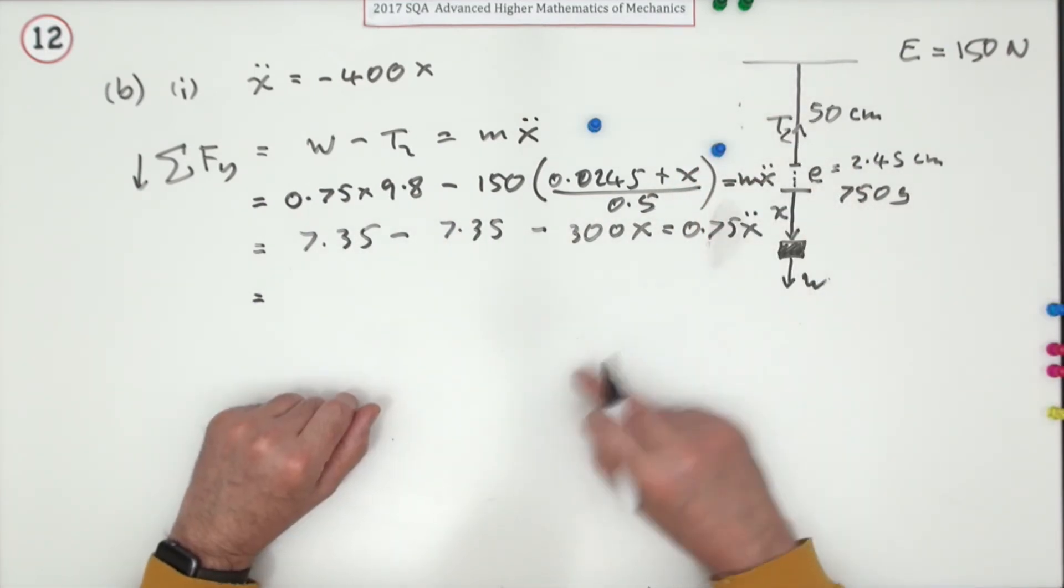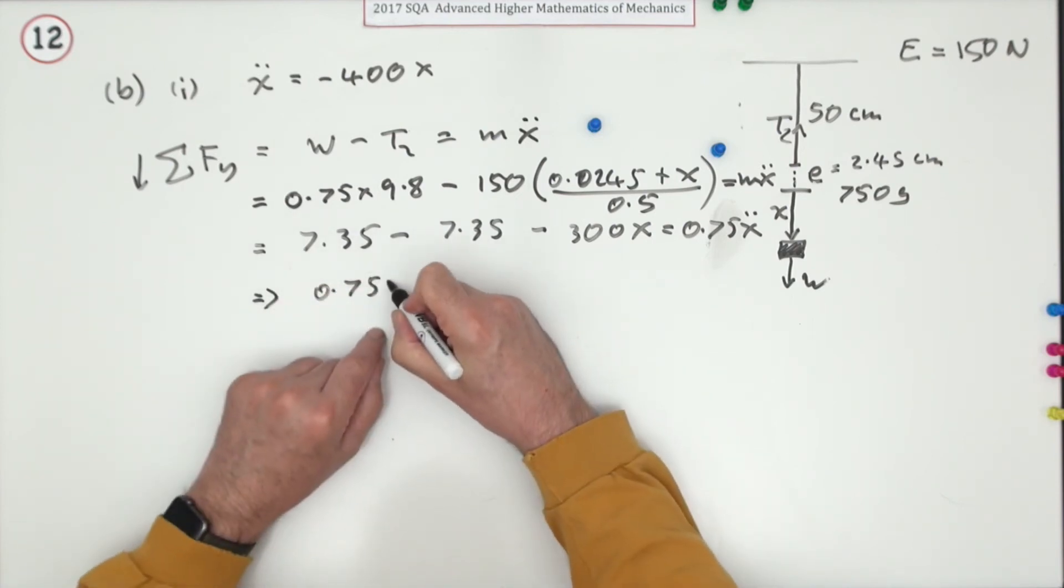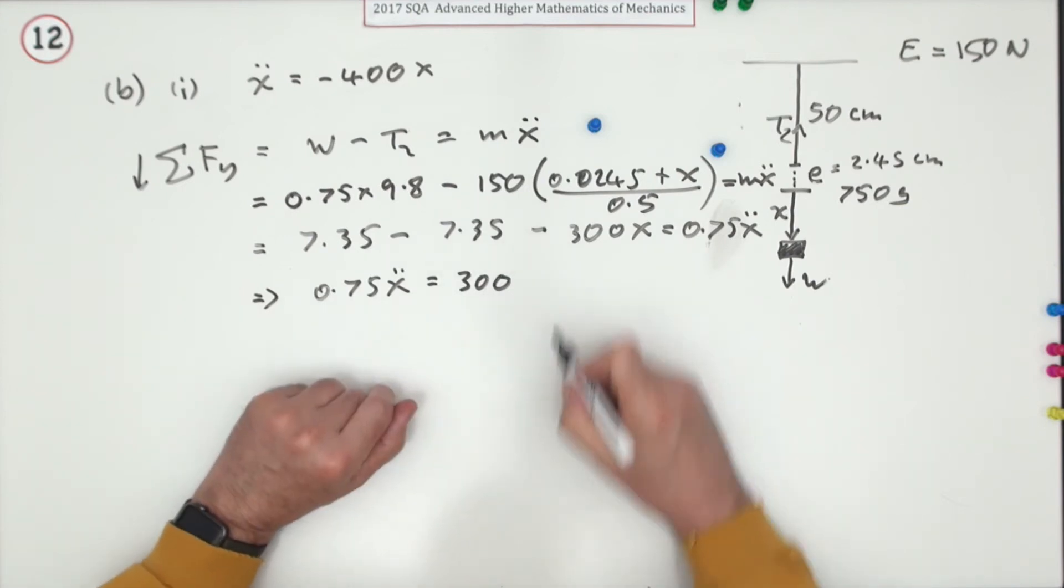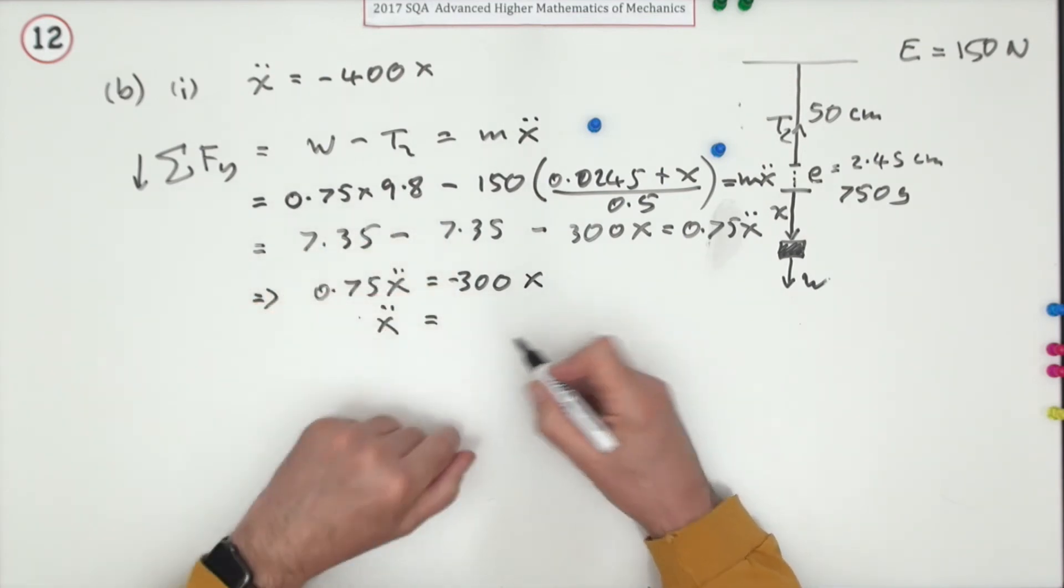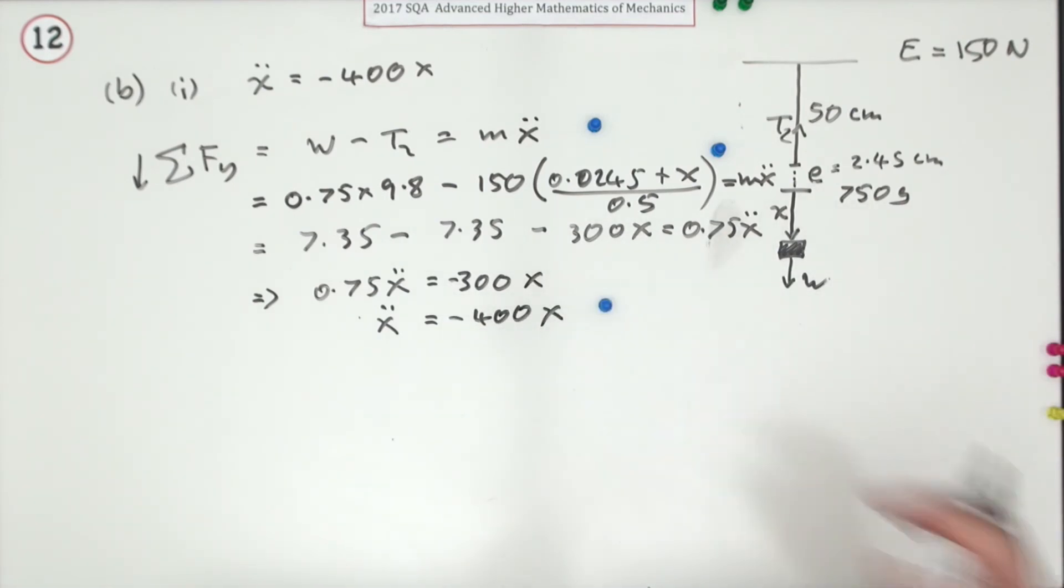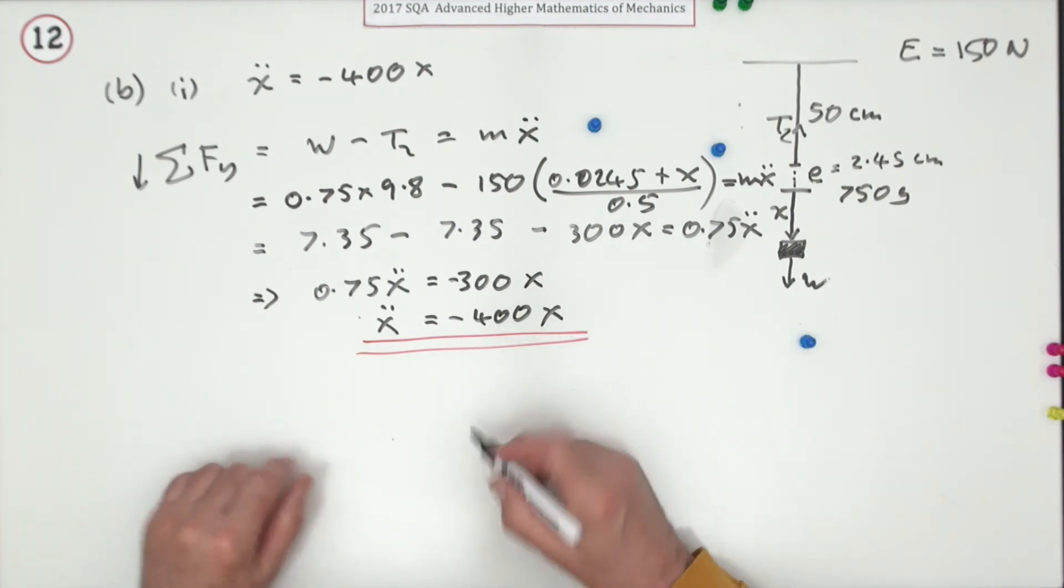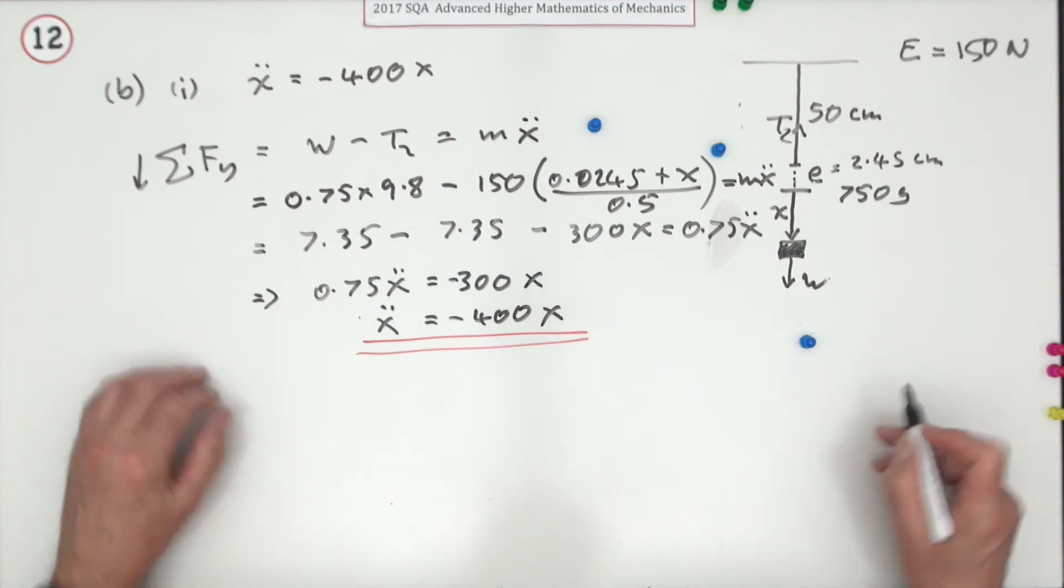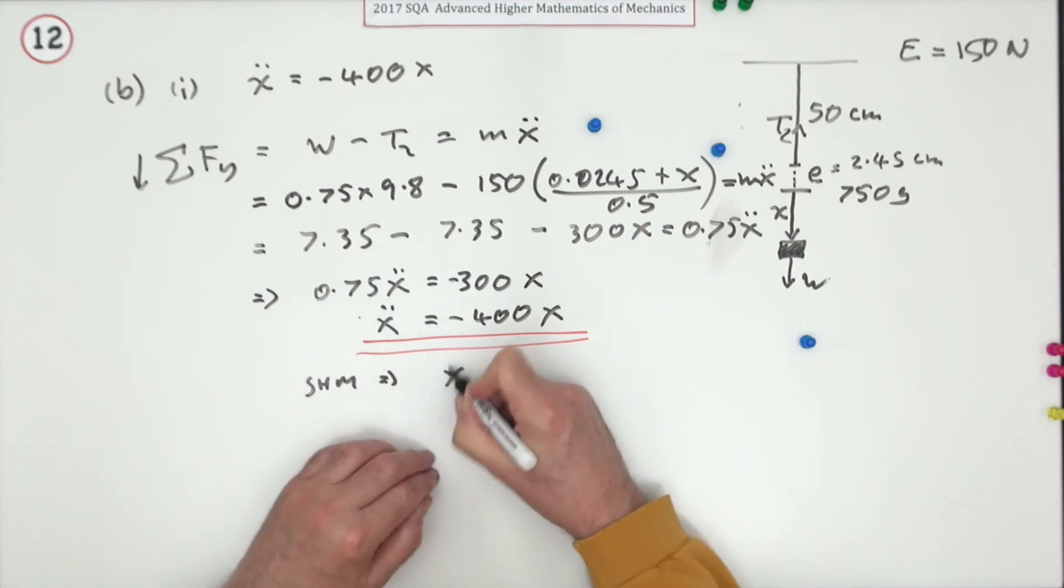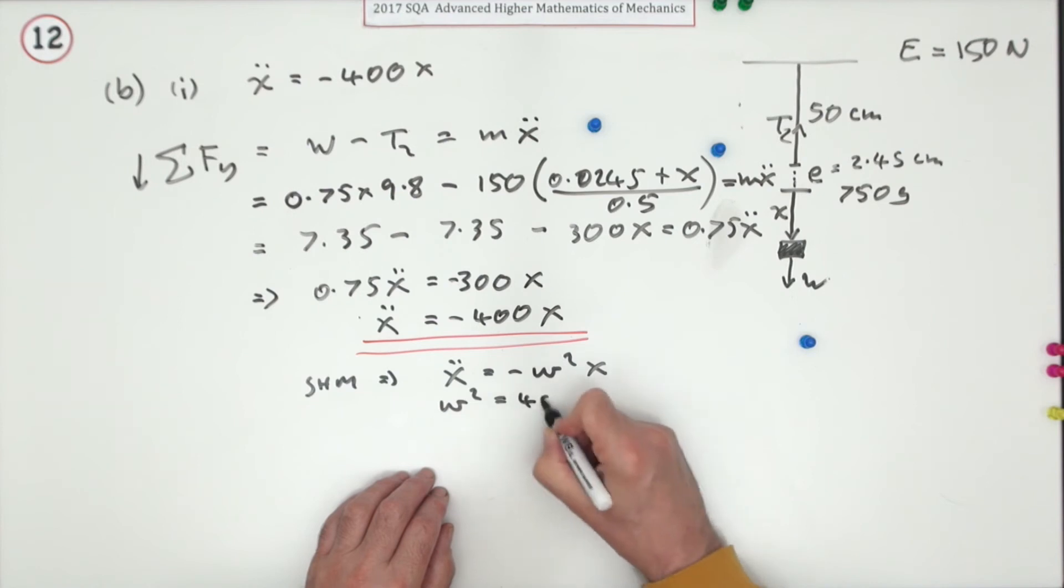Putting those figures in was the second mark. I'll rewrite this: 0.75 x double dot equals negative 300x. So x double dot equals - that's four upon three times it - minus 400x for the third mark. It did say show it moves with simple harmonic motion. Simple harmonic motion means you've got x double dot equals negative omega squared x. So is simple harmonic motion where omega squared equals 400.